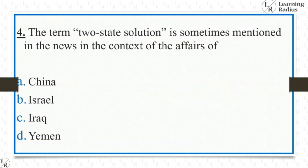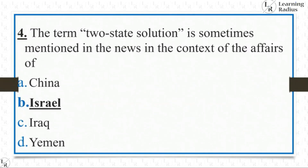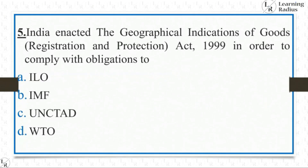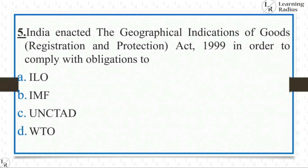The term 'two-state solution' is sometimes mentioned in the news in the context of — this is the easiest question asked by UPSC. We all know the term two-state solution is directly related with Israel, so it's a very simple question. Next: India enacted the Geographical Indication of Goods Registration and Protection Act 1999 in order to comply with its obligations to which body? The answer is WTO.